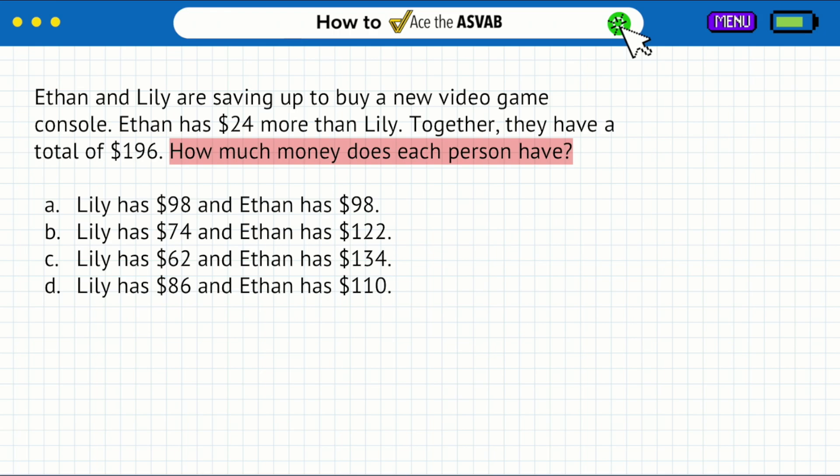If you didn't know already, this is a system of equations problem because we are trying to find two variables or two unknowns. So we want to know how much money each person has. We have Lily and Ethan, so I'll just put L and E. Let's read the information that we have and see what we can do to set things up. Ethan has $24 more than Lily, and together they have a total of $196. So how do we actually set that up?